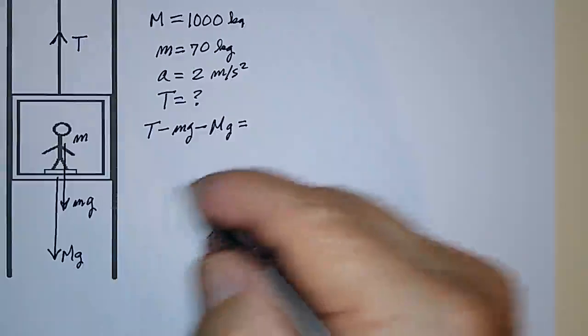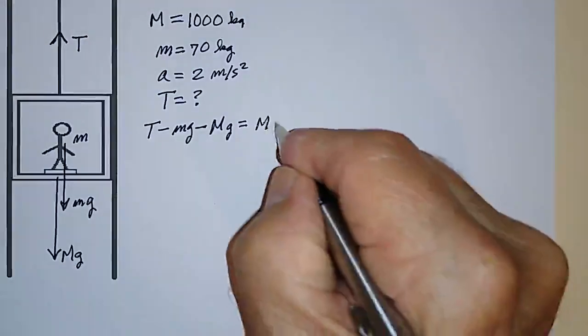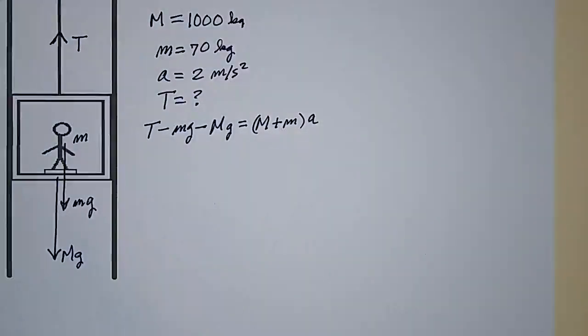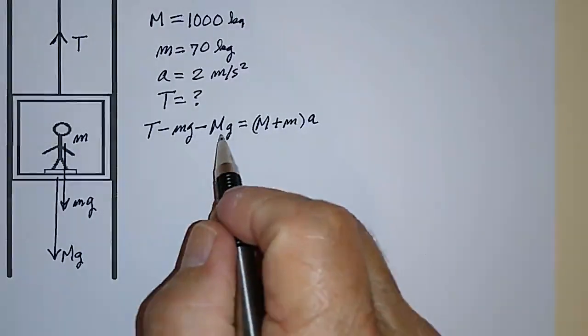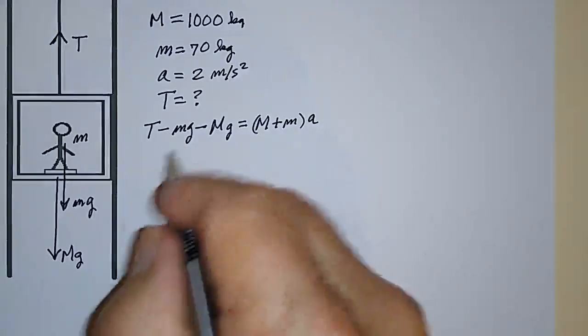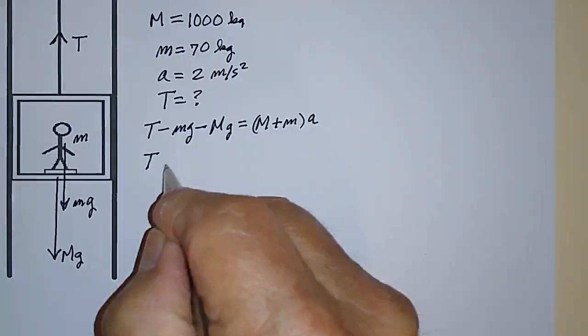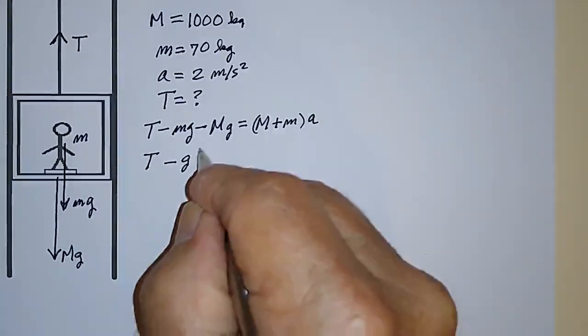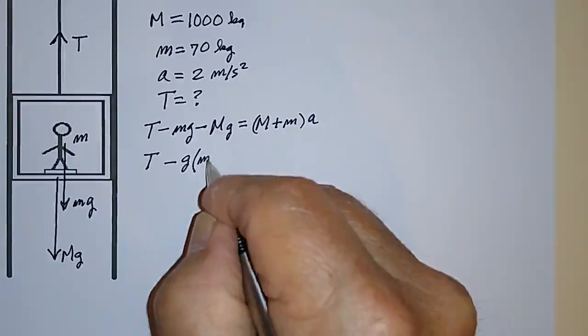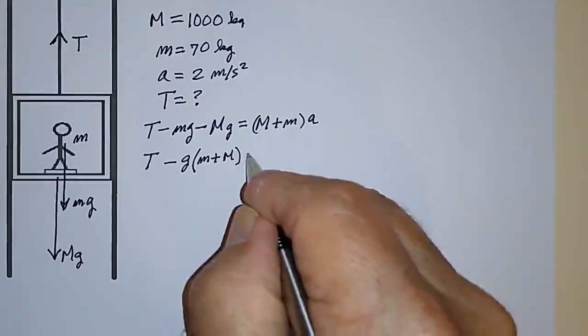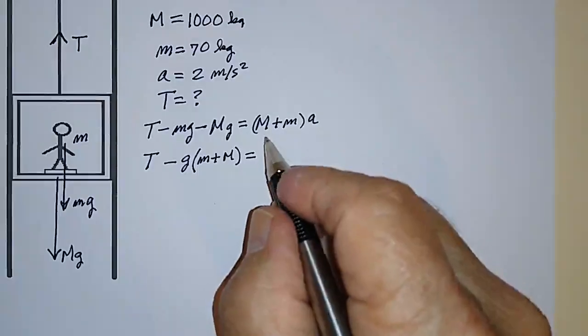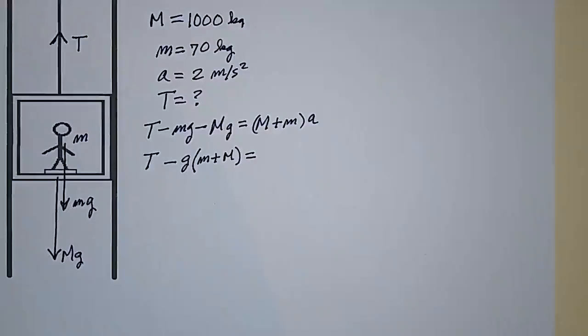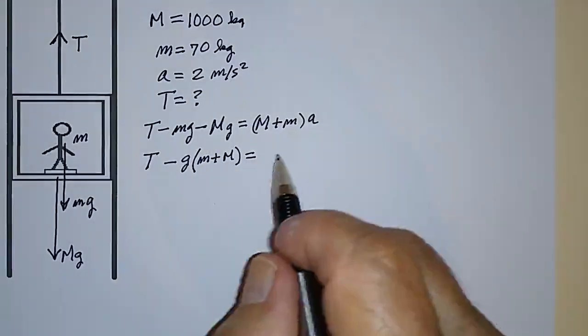And M is all of the mass that's being accelerated. So that's M plus little m times A. I can also factor out a G from this and write this as T minus G times little m plus big M. And that's all equal to M plus little m times A. If I move this to the other side of the equation...